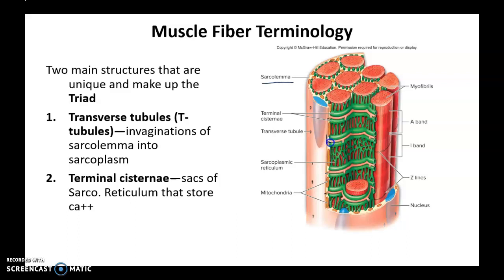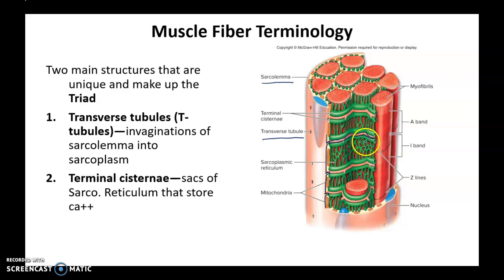The sarcolemma invaginates — do you see how it invaginates? These invaginations of the sarcolemma form T-tubules, or transverse tubules. The pink tube-like structure is called a T-tubule, which is formed by the invagination of the sarcolemma, and it is tucked around every myofibril.